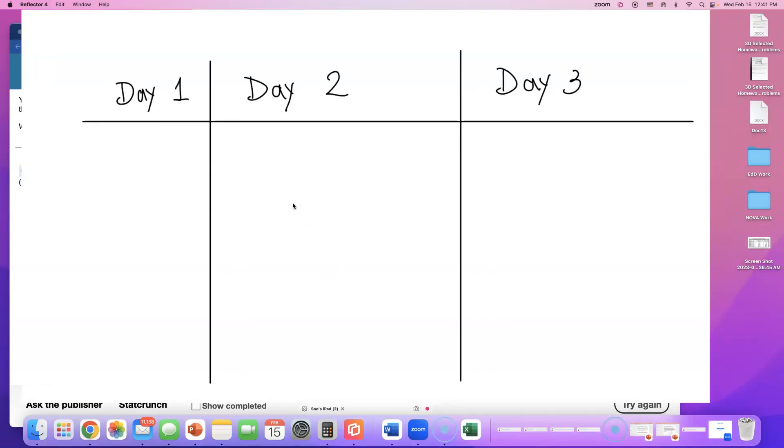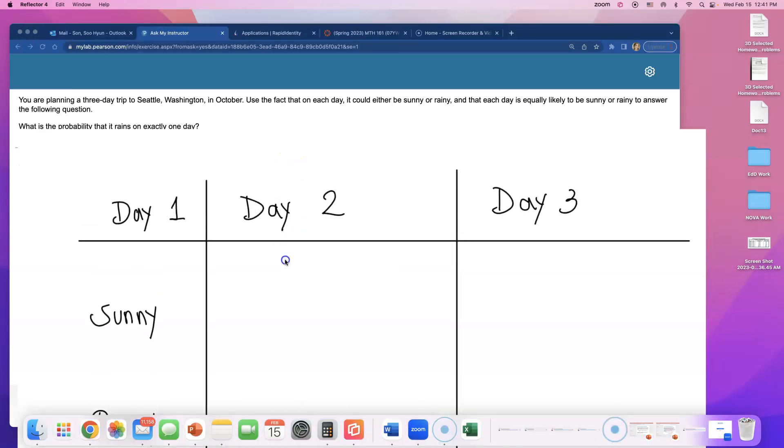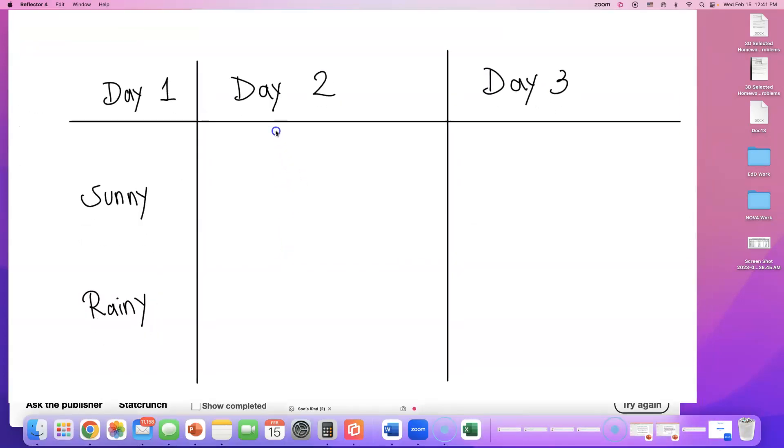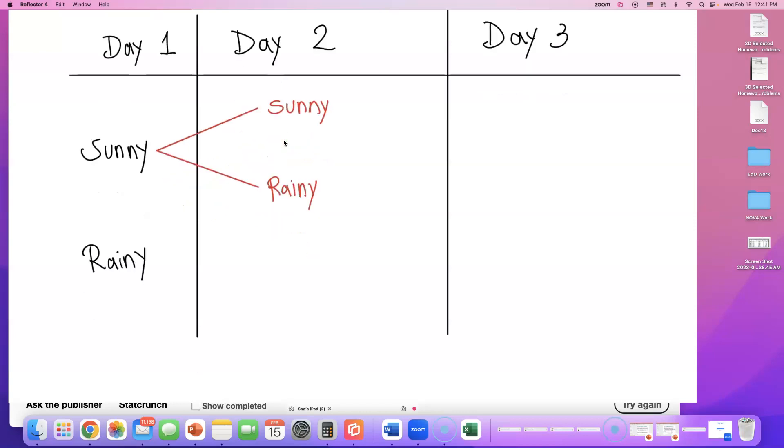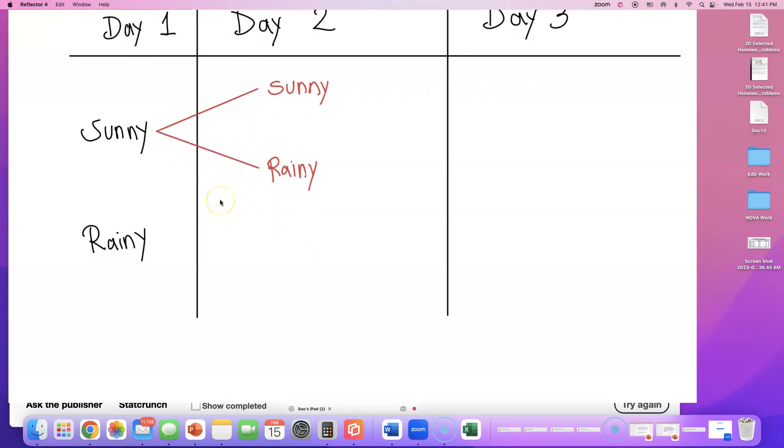Day one could be either sunny or rainy, right? There's no other weather option. Let's say that you started with a sunny day on day one. Day two could be sunny or rainy. The other branch, let's say that we started with a rainy day.